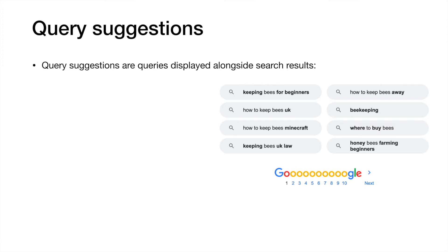What do query suggestions look like? Query suggestions are queries that are displayed alongside search results. Here we have an example from Google where the query 'how to keep bees' has resulted in some query suggestions at the bottom of the results page. These query suggestions can either be follow-on queries or reformulations of the same query. An example of a follow-on query is 'beekeeping bees for beginners' — made a little more specific. An example of a query reformulation is 'beekeeping' — using more specialist vocabulary.